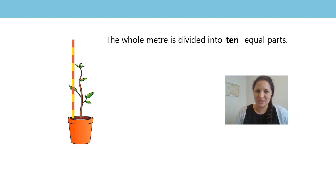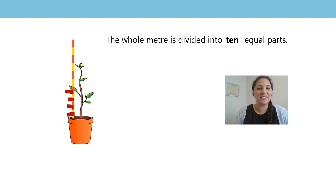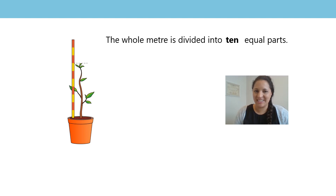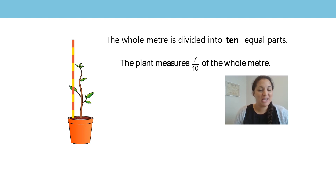Let's count. One one-tenth, two one-tenths, three one-tenths, four one-tenths, five one-tenths, six one-tenths, seven one-tenths. So let's say our stem sentence together: the plant measures seven-tenths of the whole metre.